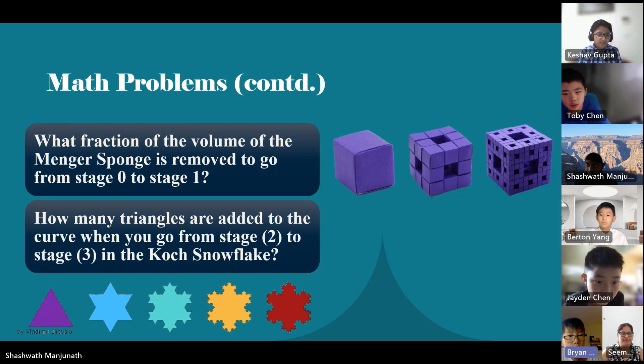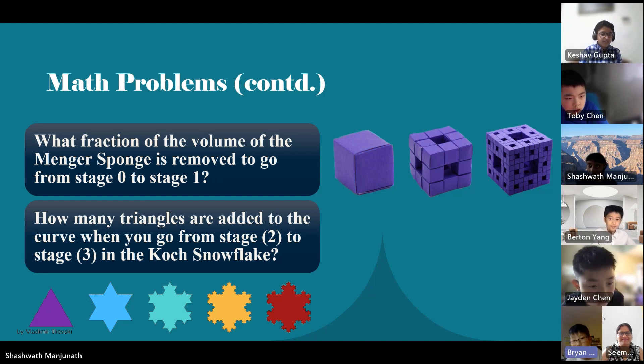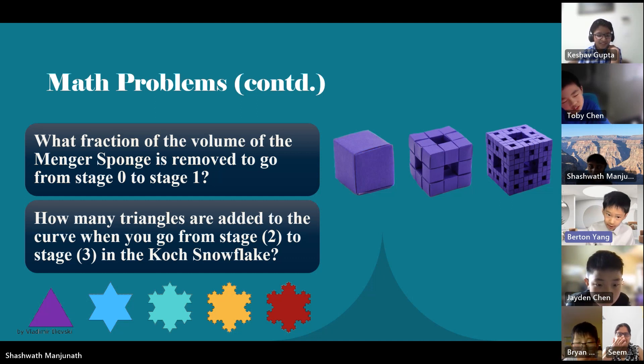What fraction of the volume of the Menger sponge is removed to go from stage zero to stage one? How about one to two? Do the same thing with question two. Go as far as you can. Let's see how far you can go. From stage zero to one. So let's just assume that its area is 27 because it's then divided into 27 little weird cubes. So when you remove the center cube and the six sides, you are removing seven out of 27 of the area.